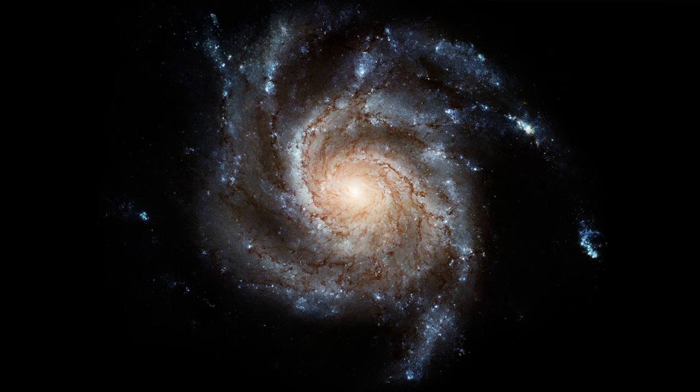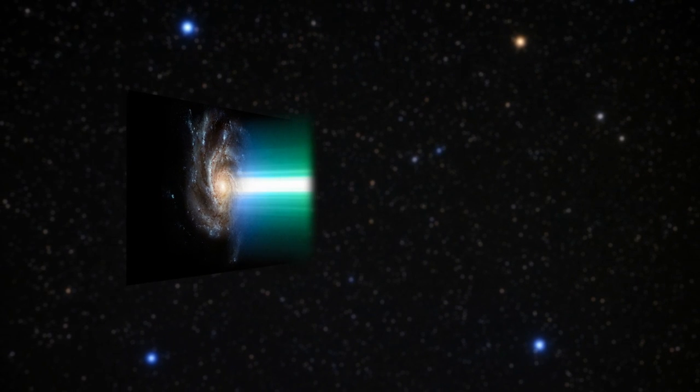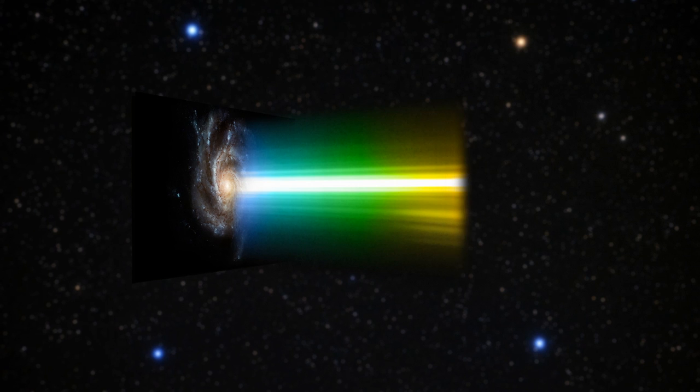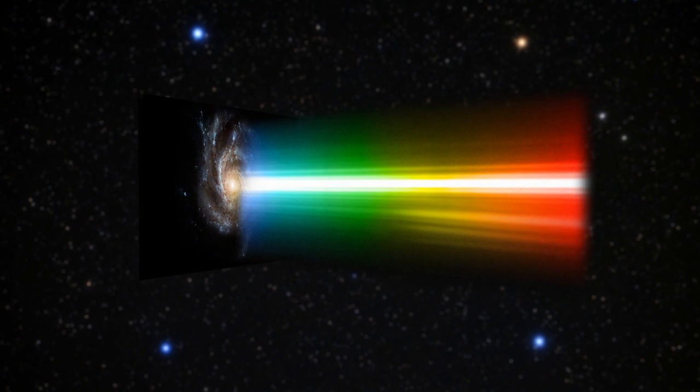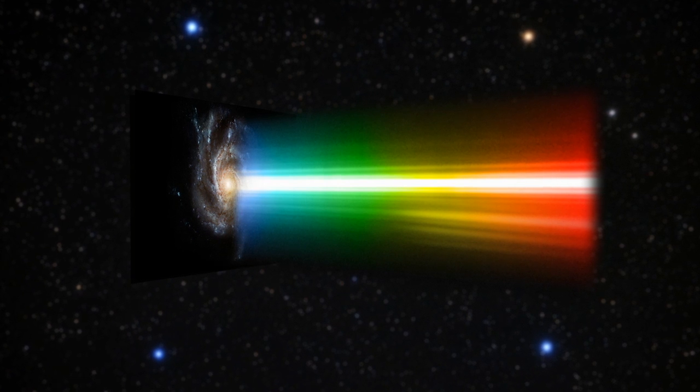A distant galaxy's spectrum reveals which elements it's made of. Every substance affects or emits light in a particular way, imprinting a series of bright or dark lines in the spectrum that betrays its presence.